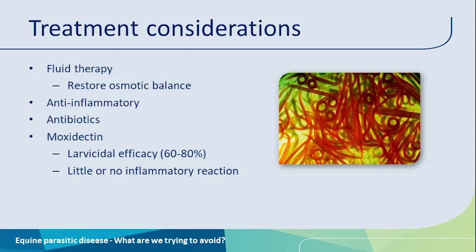Treatment is often supplemented with anti-inflammatories and antibiotics for the possible risk of secondary bacterial infection. The anthelmintic of choice is moxidectin these days, for two reasons. First, we do not have any resistance reported to the larvicidal efficacy of this compound — in contrast to the five-day double dose of fenbendazole, which is the only alternative with larvicidal efficacy, and where resistance has been reported. Second, a whole series of studies have evaluated the local mucosal inflammatory reaction to moxidectin and found very subtle or essentially no reactions. So moxidectin is safe and effective and will remove a large proportion of the larvae, thereby reducing further disease.